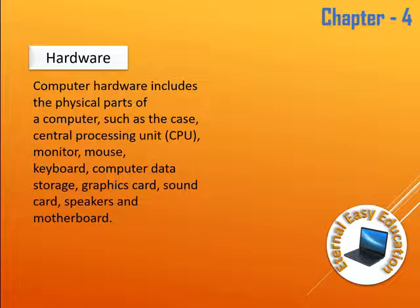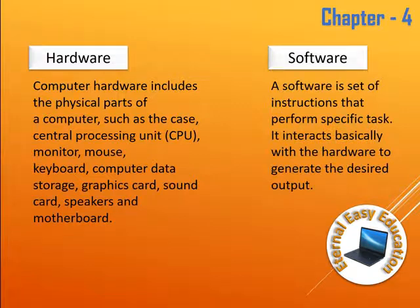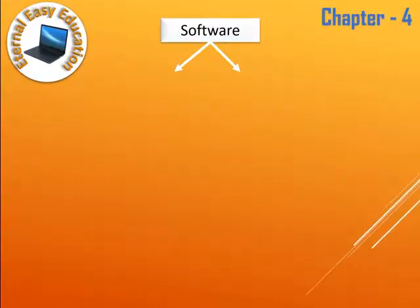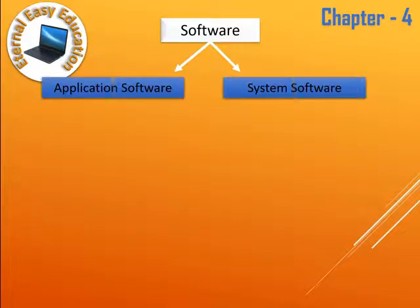All those physical components are said to be hardware. Software is a set of instructions that perform specific tasks. It interacts with the hardware to generate the desired output. A computer is hardware, but it is useless without software. With the combination of hardware and software we have a complete computer. Software, as a set of instructions, can be divided into two types: application software and system software.